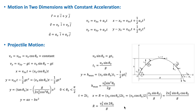The projectile can be considered a combination of vertical motion with constant acceleration a_y = −9.8 m/s² in the y direction, and horizontal motion with zero acceleration, which is constant velocity motion.